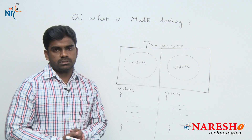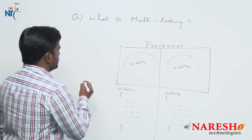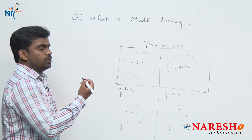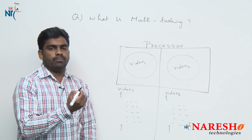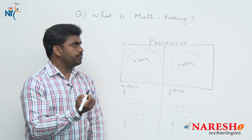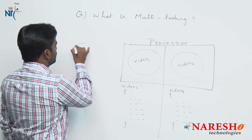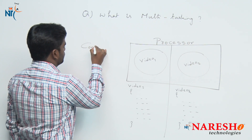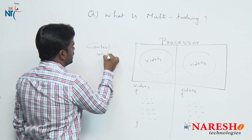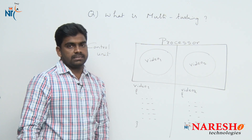In the CPU — the central processing unit — there is one unit: the arithmetic and logic unit, the memory unit, and we also have a control unit concept. This control unit takes care of multitasking.